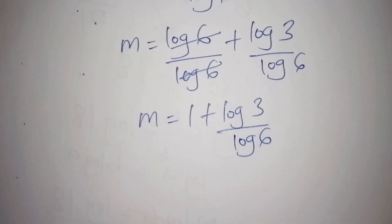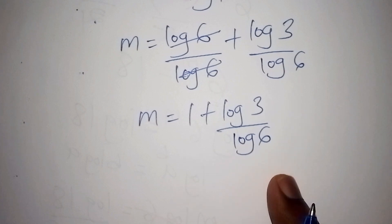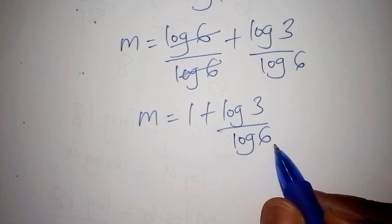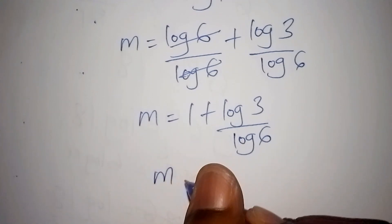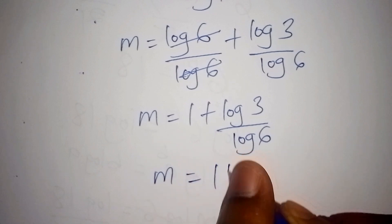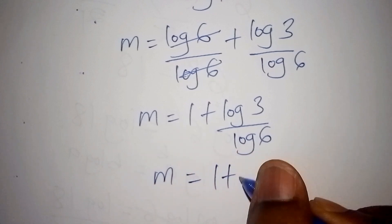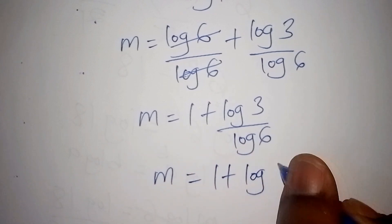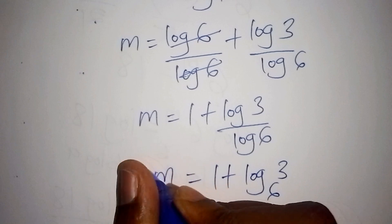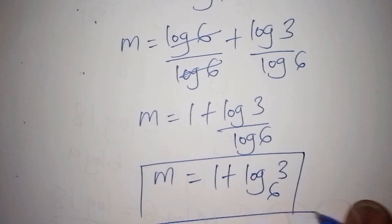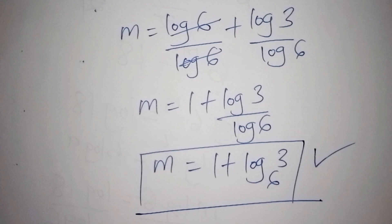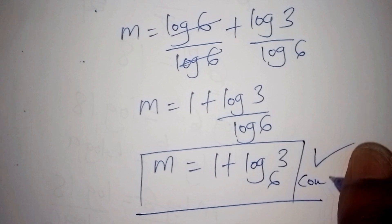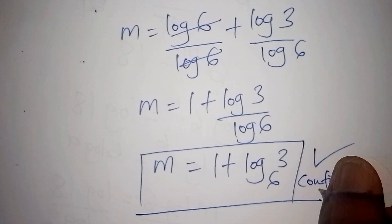We can rewrite log 3 over log 6 as log base 6 of 3. So the value for m is equals to 1 plus log of 3 to the base of 6. If you worked it out and got this, you are right. Let's now confirm and check if this answer is correct.